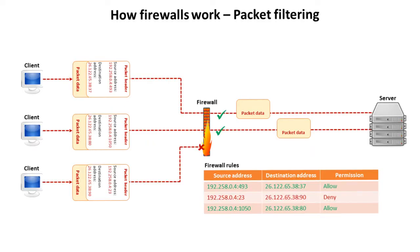Firewalls effectively filter all network communication both in and out of a network. Firewalls fall into two broad categories: software and hardware firewalls, although it is quite common to get a combination of the two.